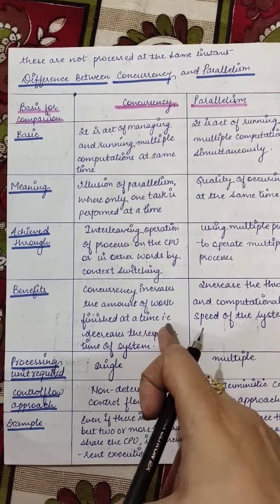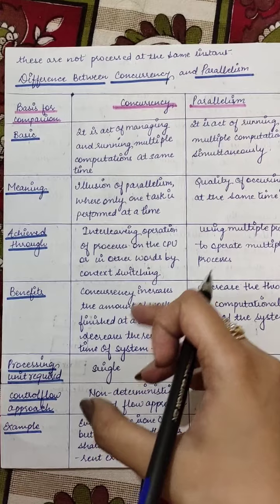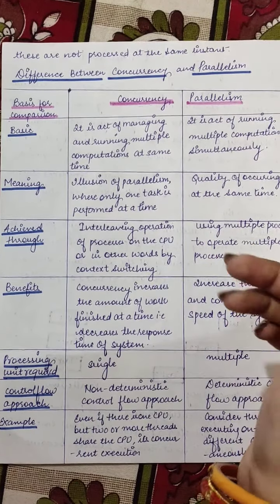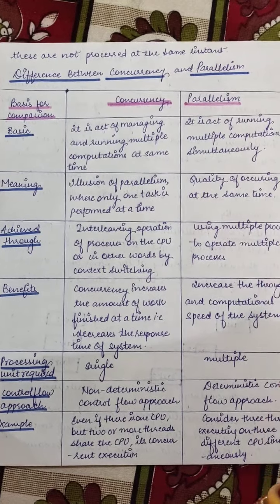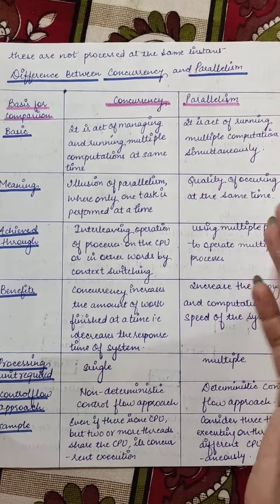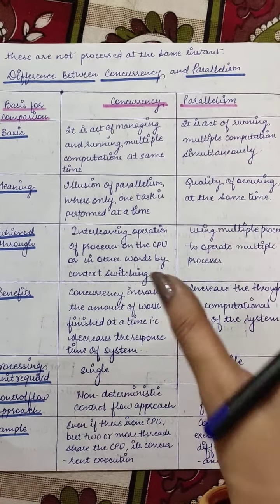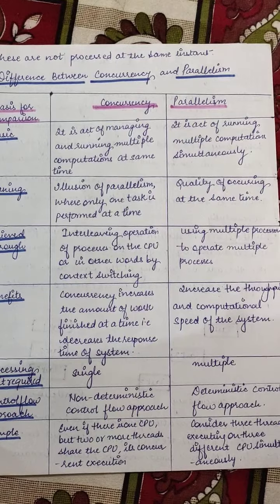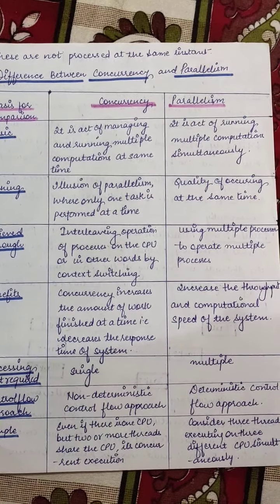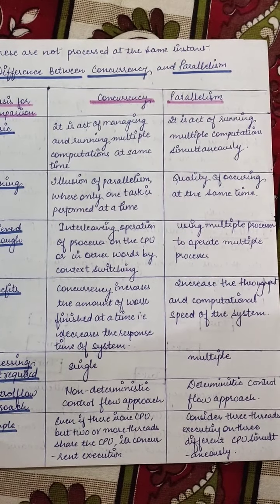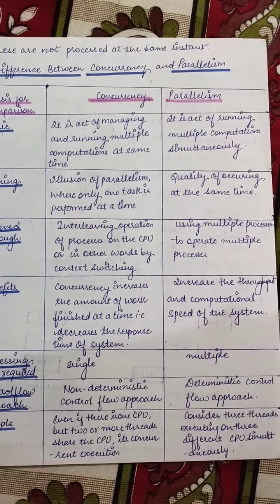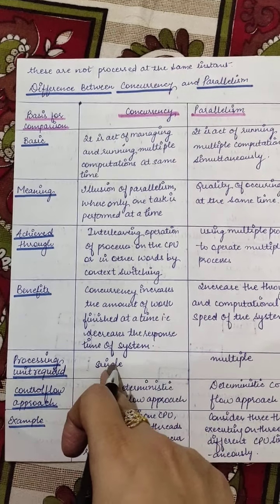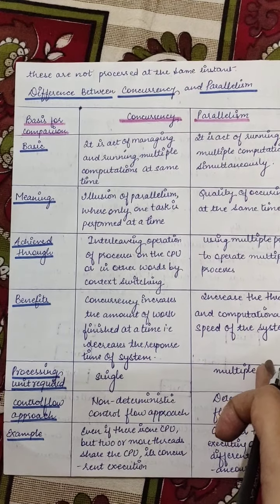The benefits: concurrency increases the amount of work finished at a time and decreases the response time of the system. Because P1 runs for a while, then we switch to P2, then back to P1 — so you get a response for all 100 tasks even if none is fully complete. Parallelism increases throughput and computational speed — if there are 100 tasks and 10 processors, the speed is definitely improved. For concurrency, you only need a single processor; for parallelism, you need multiple processing units.